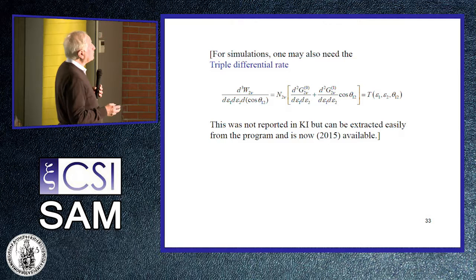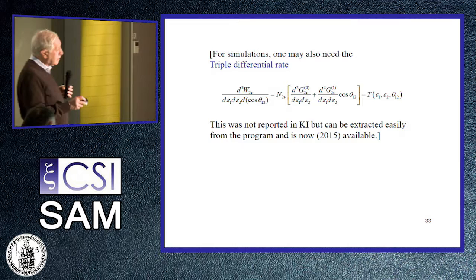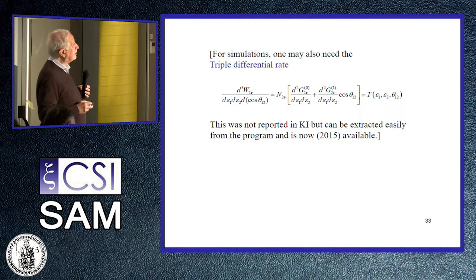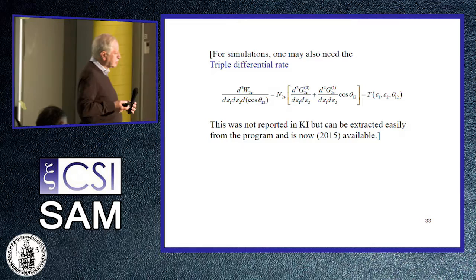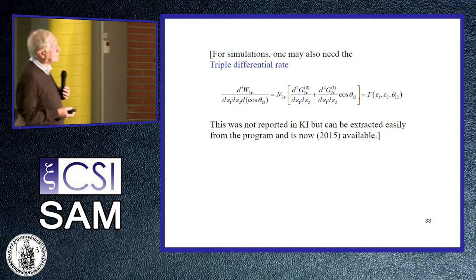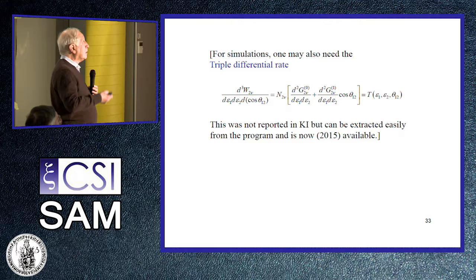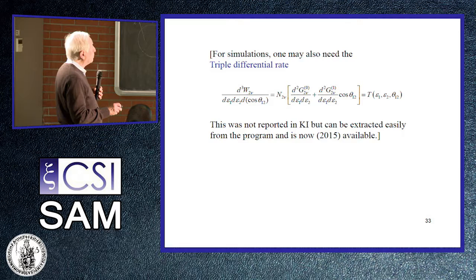For simulations, one may also need the triple differential rate in terms of the energy of the two electrons and the angle between them. This was not reported in the original 2012 publications, but it can be extracted easily from the program and is now available. For CUORE, this is important for making simulations of what to expect for the signal in case zero-neutrino double beta decay is observed, and they also need it for two-neutrino double beta decay.